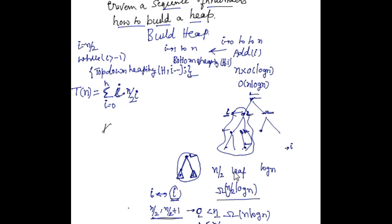How did we get this? We are looking at a node at height i. If the height of the node is i, calling top-down heapify does exactly i comparisons. We have also seen there can be at most n/2^i nodes at height i. We simplify this: n comes out of the summation, giving us n times the summation of i divided by 2^i where i goes from 0 to h. We can show that this summation is smaller than or equal to 2n.